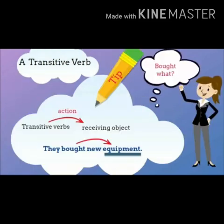A transitive verb answers the question 'what.' For example: 'They bought new equipment.' They bought what? Equipment. Yes, 'equipment' is the object here, answering the question 'they bought what — equipment.'